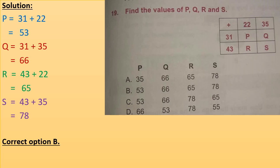R equals to 43 plus 22 equals to 65. And S equals to 43 plus 35 equals to 78. So correct option is B.